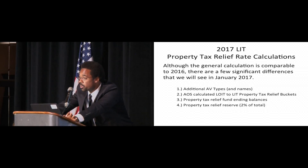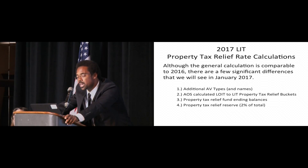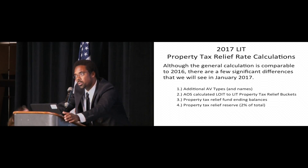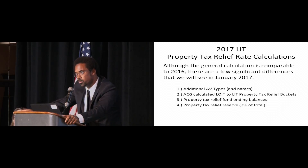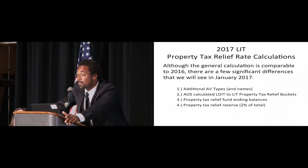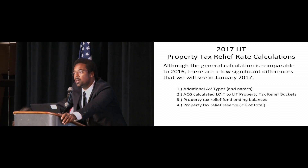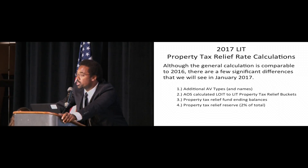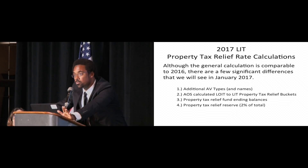The third change in the calculation deals with the property tax relief fund ending balances. Historically, when we went to calculate property tax relief, we would take the amount of money we are distributing in the upcoming year, add the property tax relief balance from the beginning of the year, and come up with a rate accordingly. This year, we will be starting with a beginning or ending balance of zero — your rate will be calculated only on the amount of money projected to be distributed in the upcoming year. For 2017, we will be starting with a balance of zero; for 2018, we will use the full property tax relief amount available.